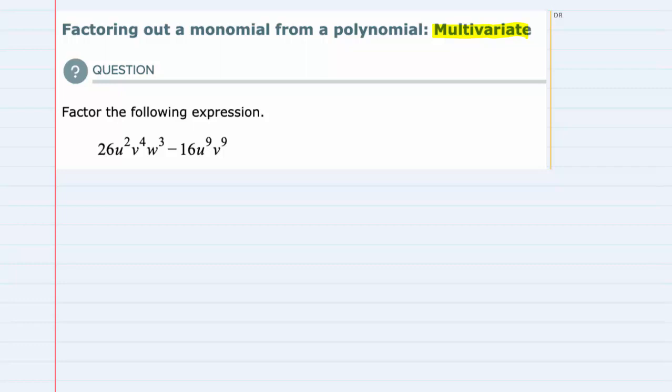It's a polynomial in that it has two terms, in this case separated by subtraction, so it's a polynomial. And we're going to factor out of that a monomial. So to get us started I'm going to look at the first values in each term, the coefficients, which are 26 and 16.